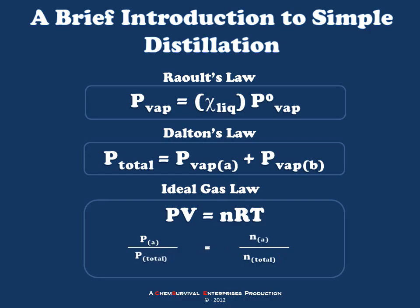We can rearrange this equality to arrive at an expression where the number of moles of A over the total number of moles is equal to the partial pressure of A over the total pressure. In other words, the mole fraction of any compound is simply equal to its partial pressure in the system divided by the total pressure within the system.